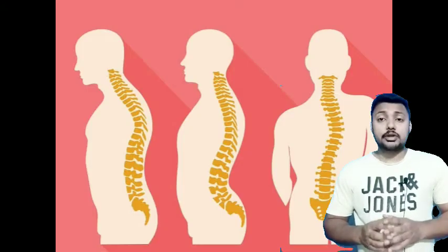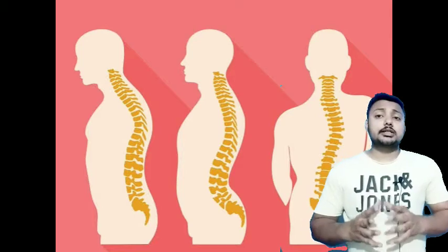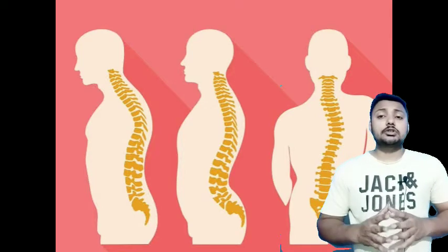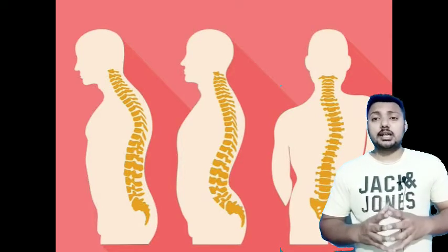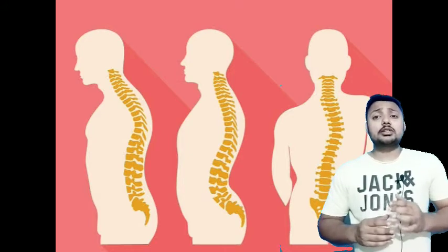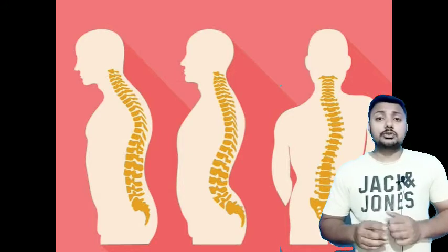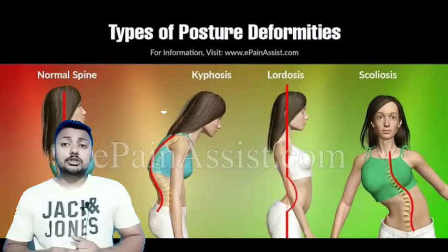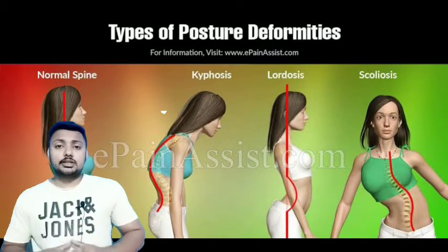First, we will discuss Spinal Curvature Deformity, which is related to your spine. Spinal Curvature Deformity is further divided into three types: Number 1 is Kyphosis, Number 2 is Lordosis, and Number 3 is Scoliosis.